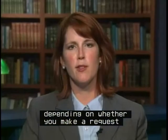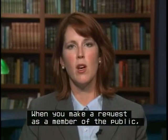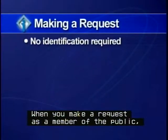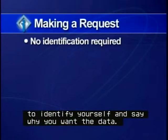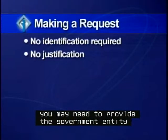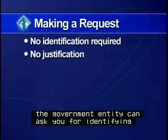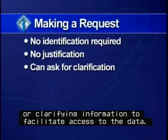Here's where the process differs depending on whether you make a request as a member of the public or as a data subject. When you make a request as a member of the public, the government entity can't require you to identify yourself or say why you want the data. You can decide whether to identify yourself. If you don't give your identity, you may need to provide some other contact information for when the data are ready or if there are any questions. Under Section 1305, Subdivision 12, the government entity can ask you for identifying or clarifying information to facilitate access to the data.